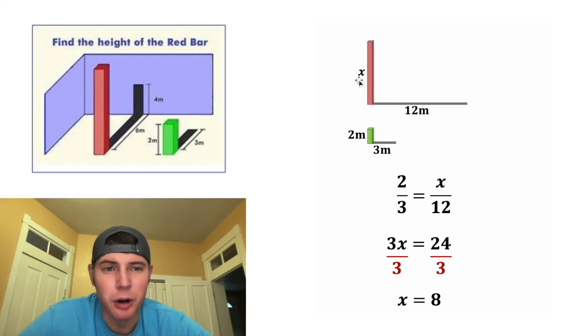X was the height of our red bar. So we can change this to eight meters. And now we're done. That's the answer to our question. Let's put a box around it. How exciting.